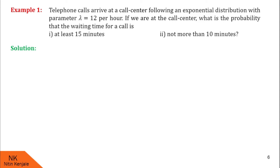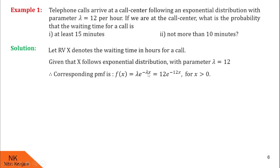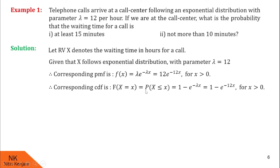Let us see its solution. Let random variable x denote the waiting time in hours for a call. Given that x follows exponential distribution with parameter lambda = 12. Therefore the corresponding PDF is f(x) = lambda × e^(−lambda × x) = 12 × e^(−12x). We can also calculate CDF: F(x) = P(X ≤ x) = 1 − e^(−lambda × x).